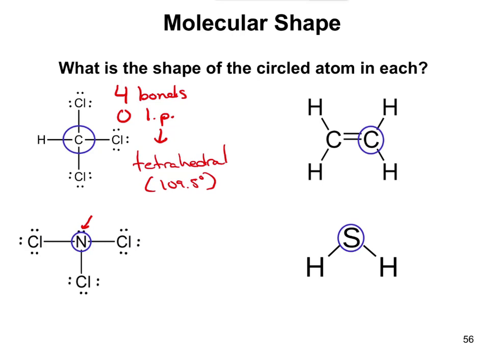remember, everything always has to have an octet of electrons. Around that nitrogen, you have two, four, six, you need to have a lone pair up here to make eight. In this case, we have three bonds, one lone pair,